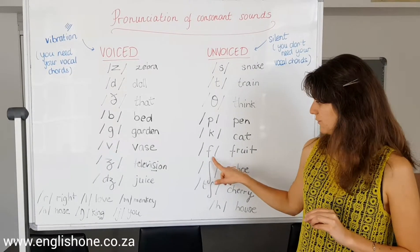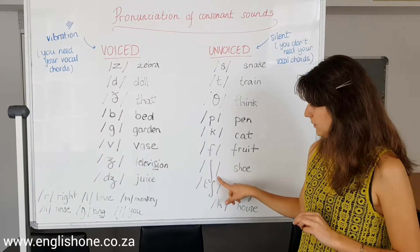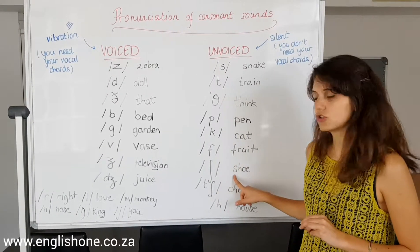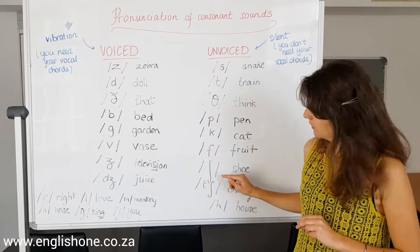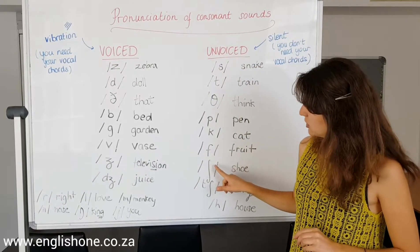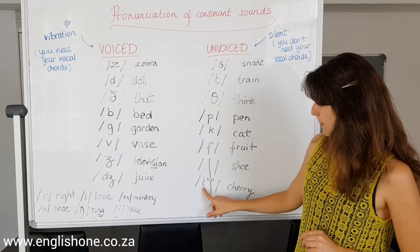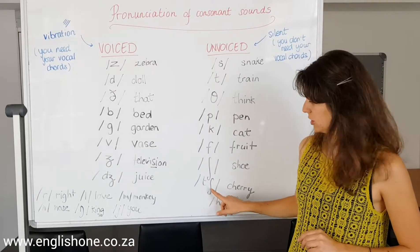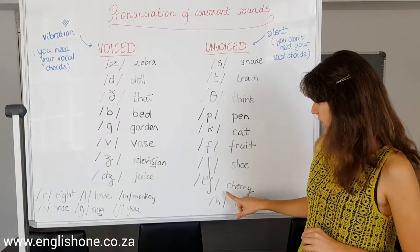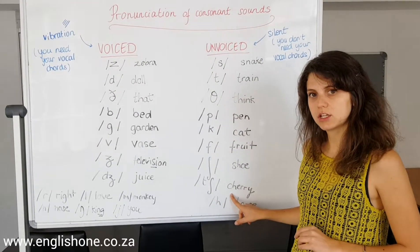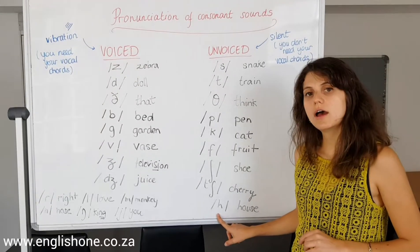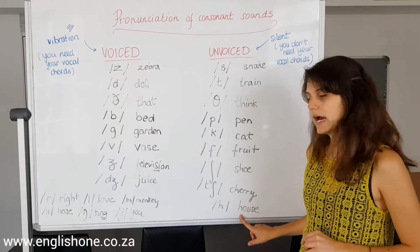F, as in 'fruit.' This one, a bit special, is SH — as in 'shoe' or 'shower.' This symbol looks a bit like a shower, with a bit of imagination. And this one is CH — T and SH together. You have it in 'cherry.' And finally, the last one is H, as in 'house.'